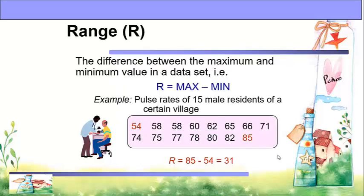The range is the difference between the maximum and the minimum value in a data set — R equals maximum minus minimum. Example: pulse rates of 15 male residents of a certain village. The lowest value is 54 and the highest is 85. To get the range, get the difference between the highest score, 85, and the lowest score, 54, and it is equal to 31.